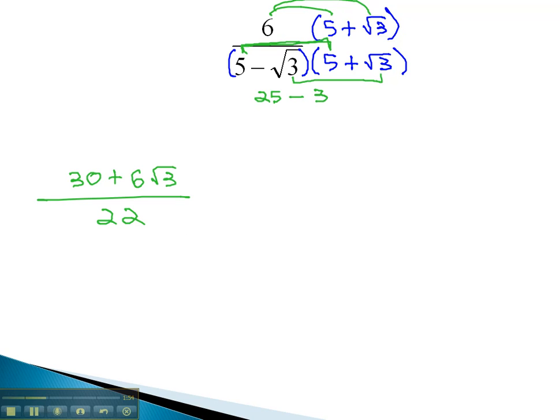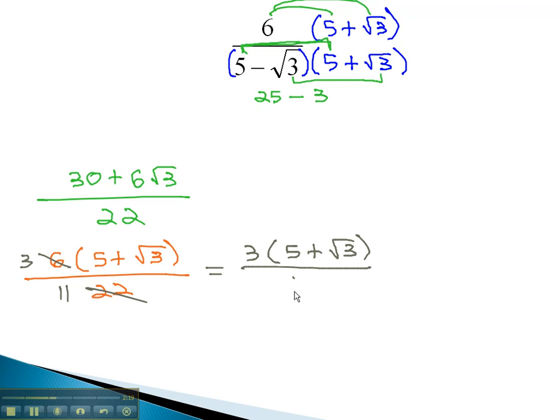Before we're allowed to reduce this fraction, we must first factor the numerator. Factoring out a 6, we're left with (5+√3)/22. And now we can reduce the 6 and 22 because they're factors by dividing by 2, leaving behind 3 and 11. So for our final answer, we have 3(5+√3)/11. You could also distribute the 3 through in the numerator and get the same equivalent solution.